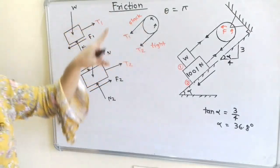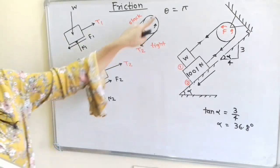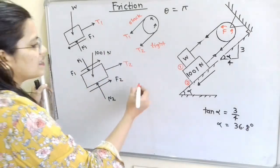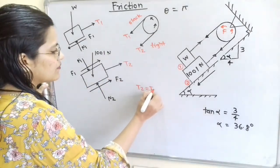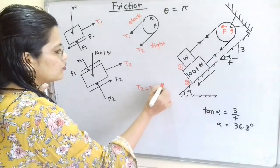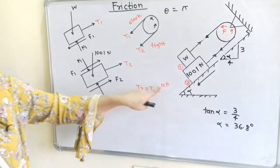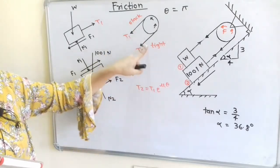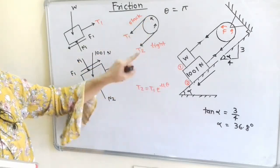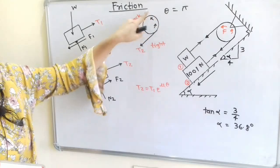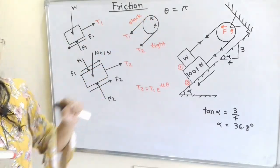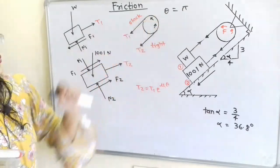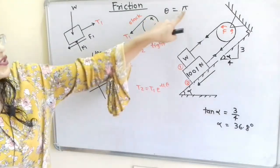By the law of rope friction, we write T2 = T1 · e^(μθ), where mu is the coefficient of friction between the rope and the disk (0.3), and theta is the angle of contact in radians (pi). This relation will be used in the calculation.